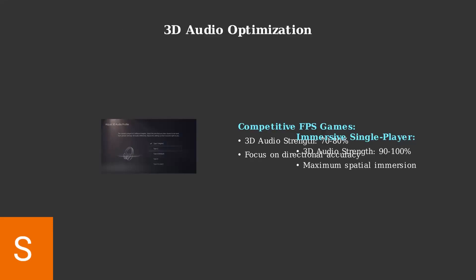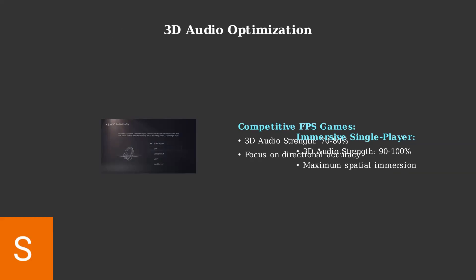These EQ adjustments work because different frequency ranges serve specific purposes in gaming audio. Low frequencies provide impact and immersion, mid frequencies carry crucial gameplay information like footsteps and dialogue, while high frequencies deliver spatial positioning and environmental details.